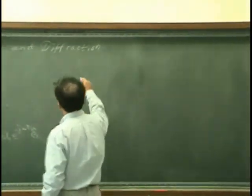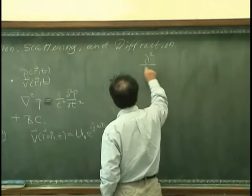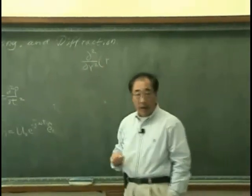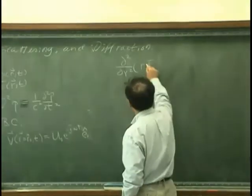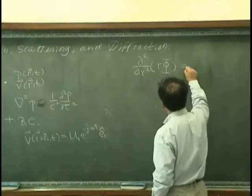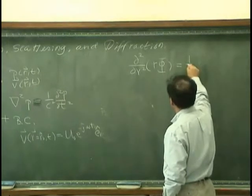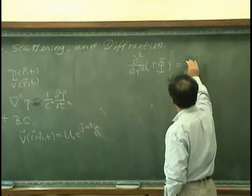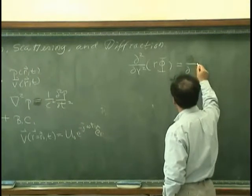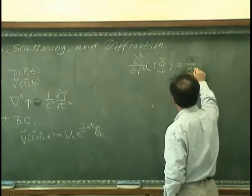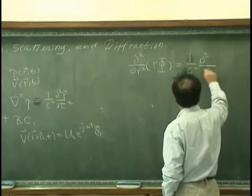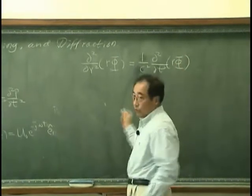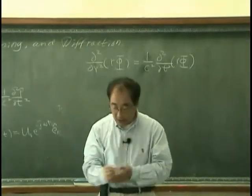I can write the wave equation would be d squared over dr squared of r times phi. And if I use velocity potential, then I can write this is rho c squared d squared phi over dt squared. The wave equation would look like this.